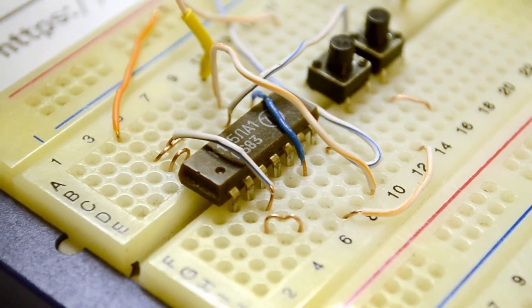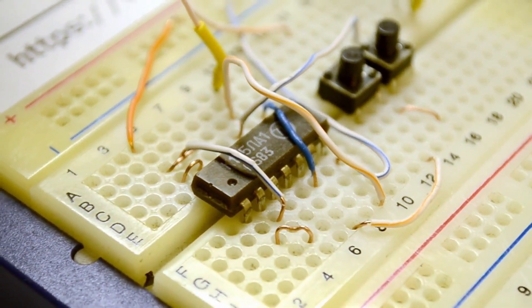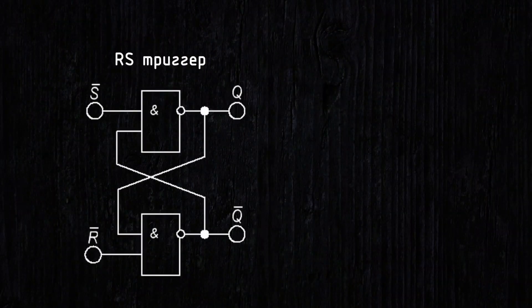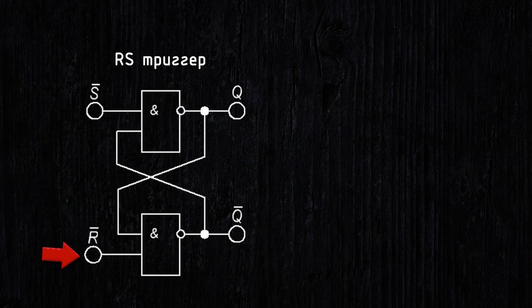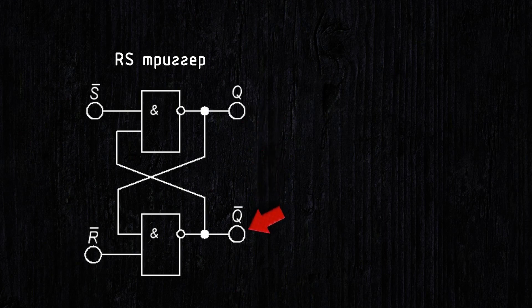Let's start with the two-input NAND gate microchip. We'll connect two elements according to the following scheme. This is the RS flip-flop circuit. The inputs are S for setting the flip-flop and R for resetting. And there are two outputs: direct and inverse. The value at the inverse output is always opposite to the direct output.